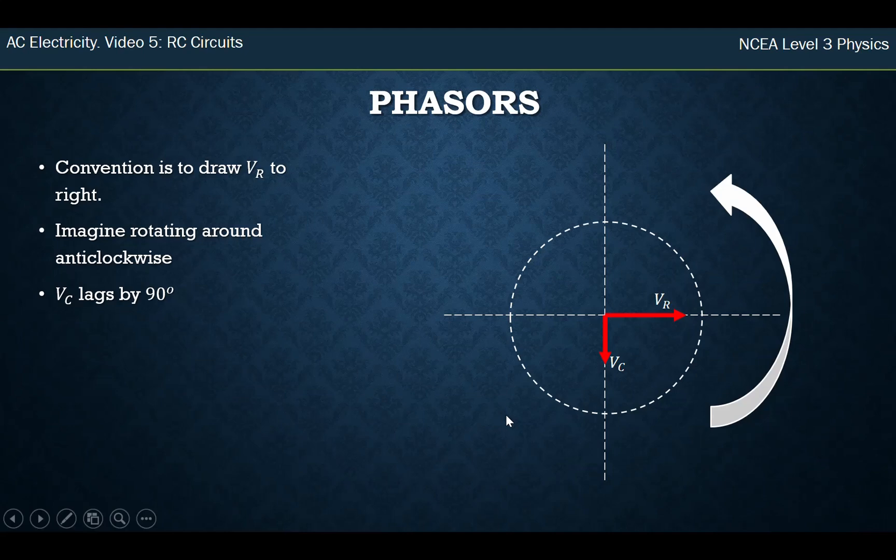So what does that look like? The convention is that we've got our circle here. You draw the voltage over the resistor out to the right, and you imagine it's rotating anti-clockwise. Remember, this is a model or a simplification of, instead of having to draw a sine wave, the voltage over the capacitor lagged this by 90 degrees. So what does that look like on a circle? It looks like this.